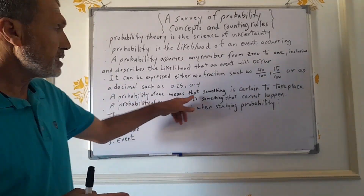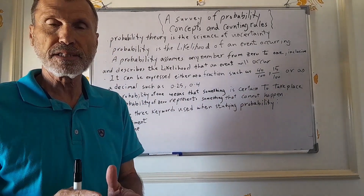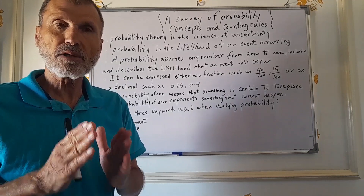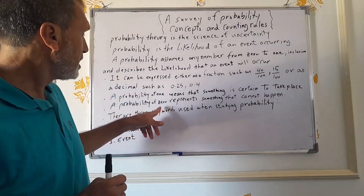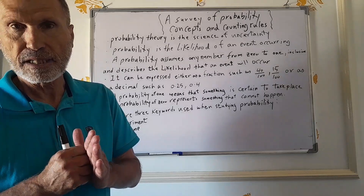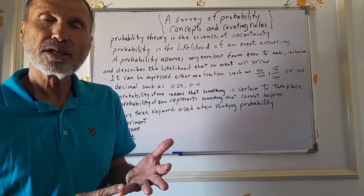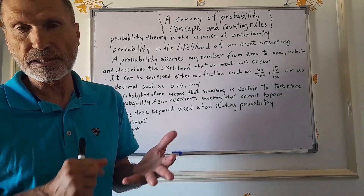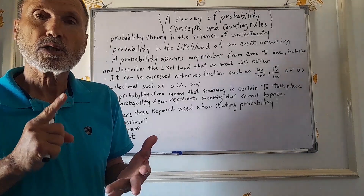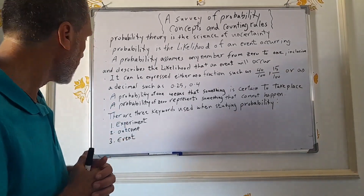A probability of 1 means that something is certain to take place — that is 100%, meaning we are completely certain. However, when the probability is 0, it means the thing will not take place; it is impossible. A probability of 1 means we are very sure that the thing will take place.